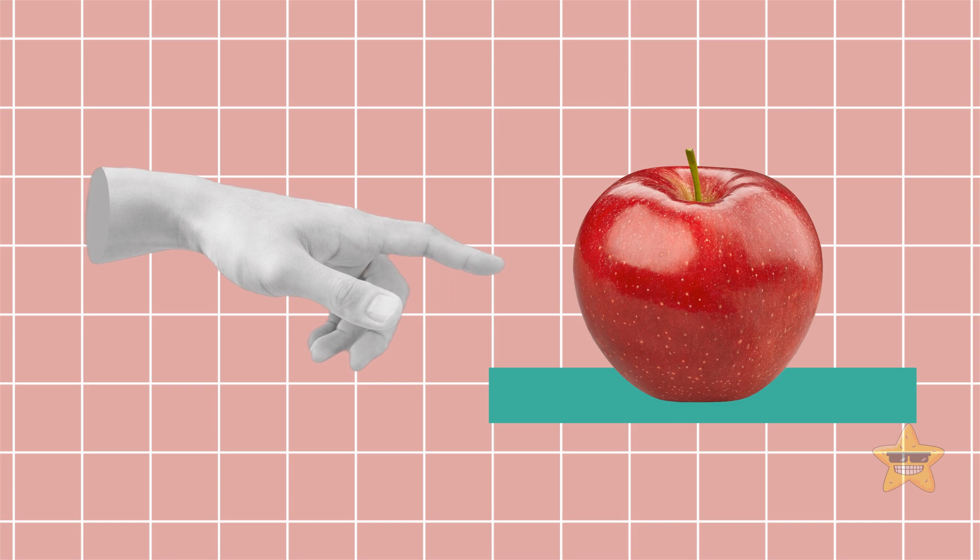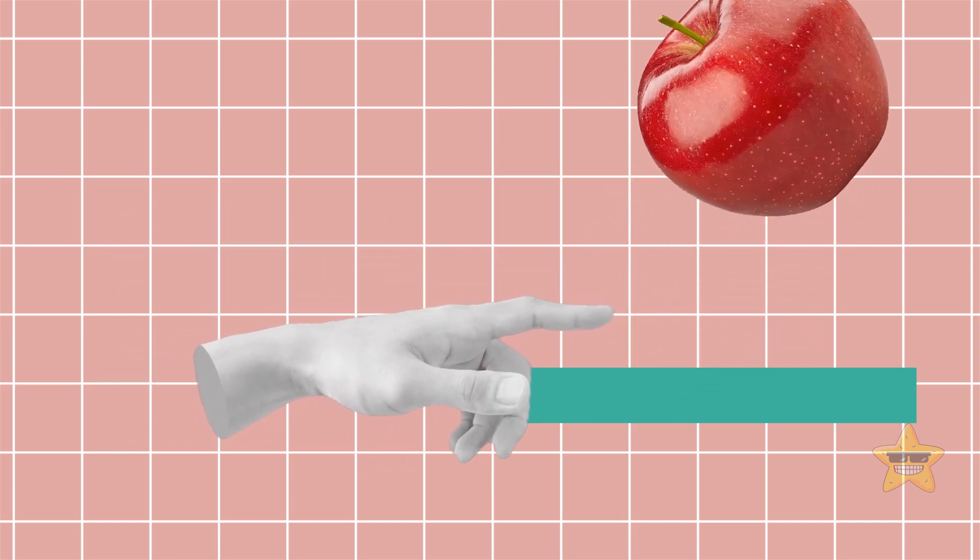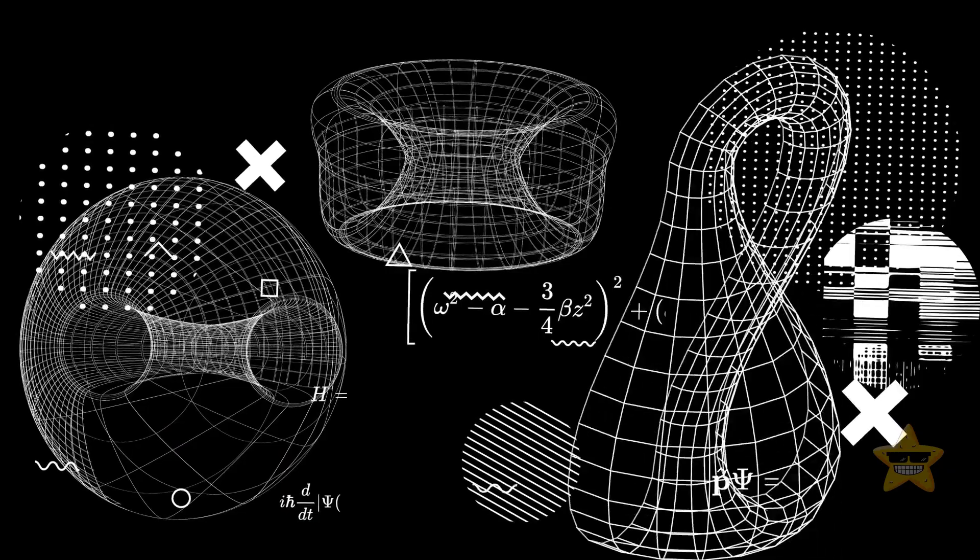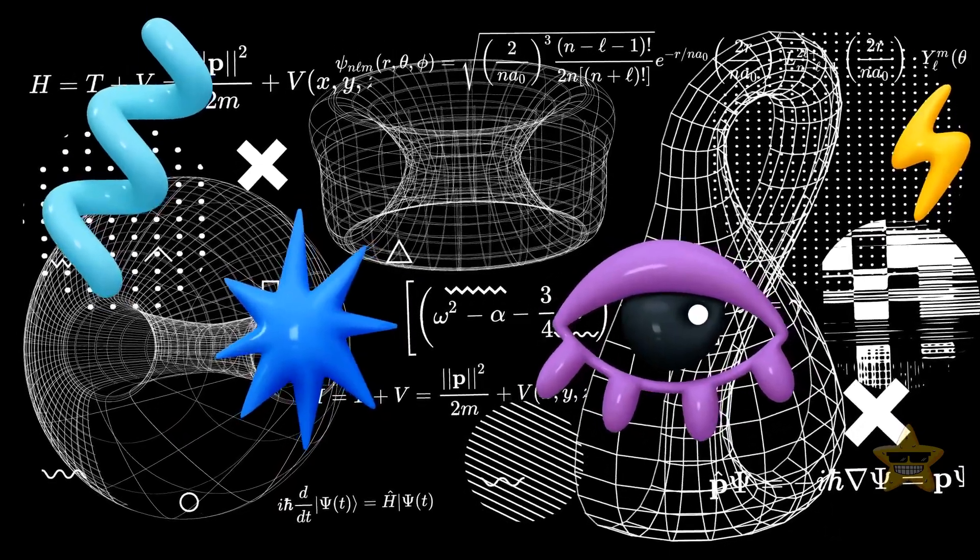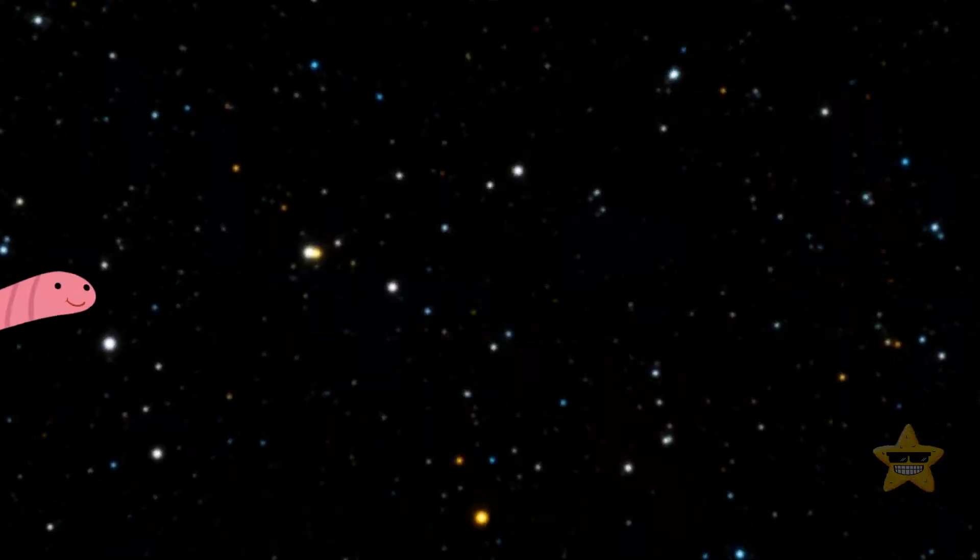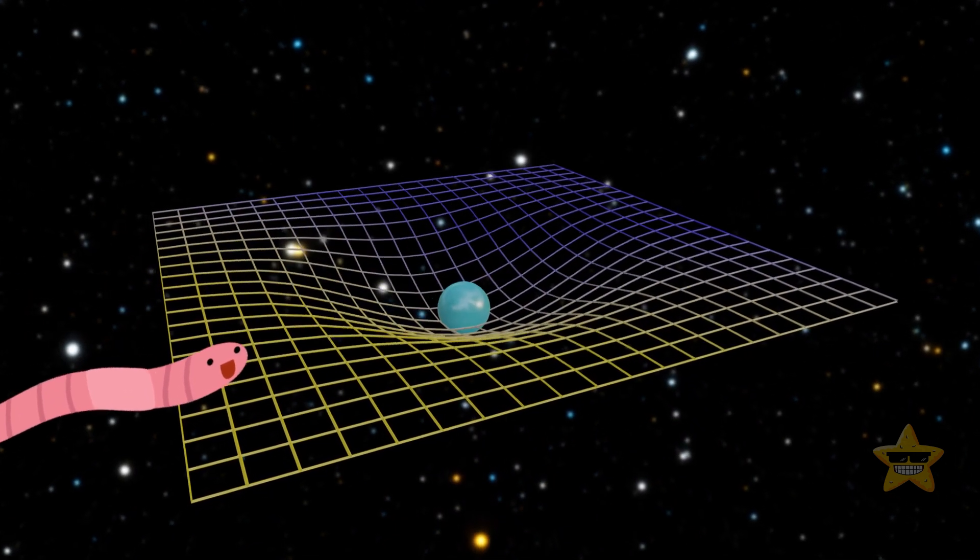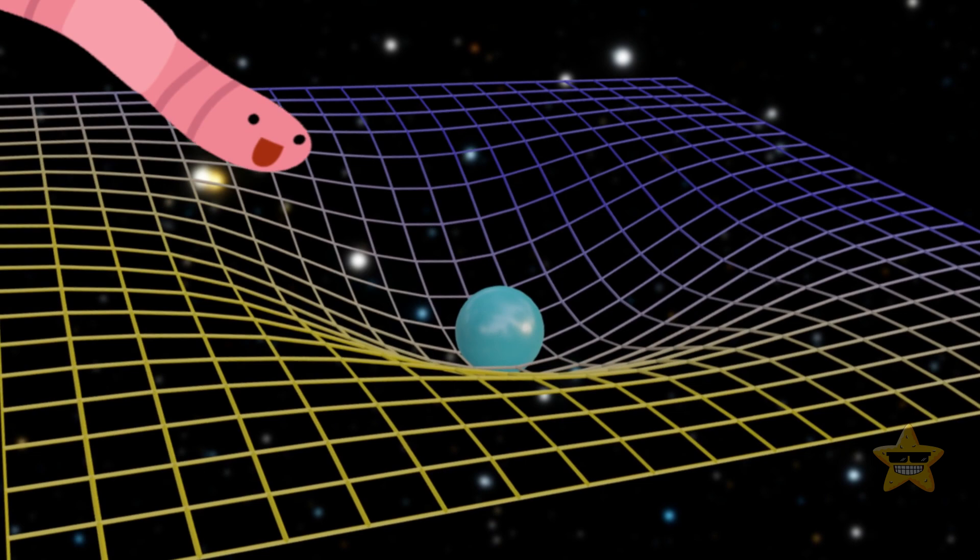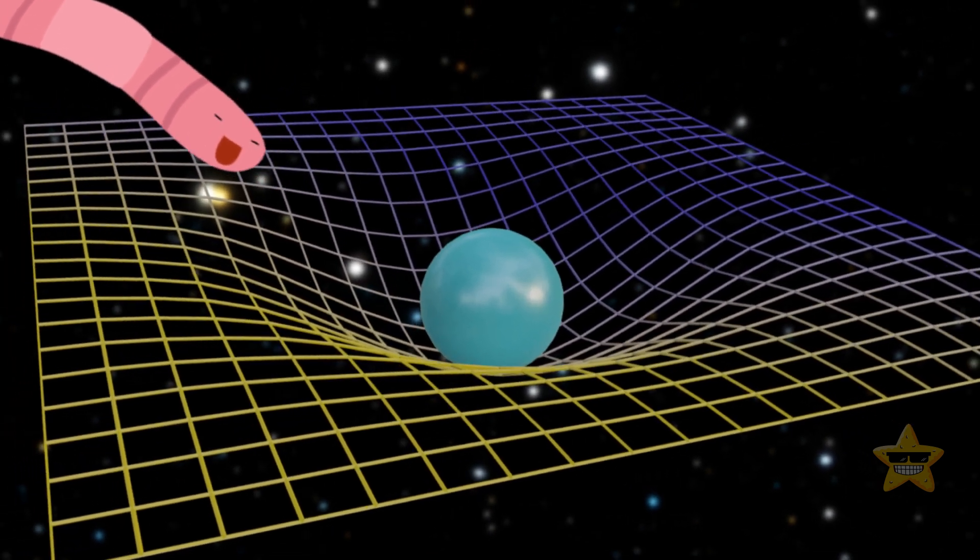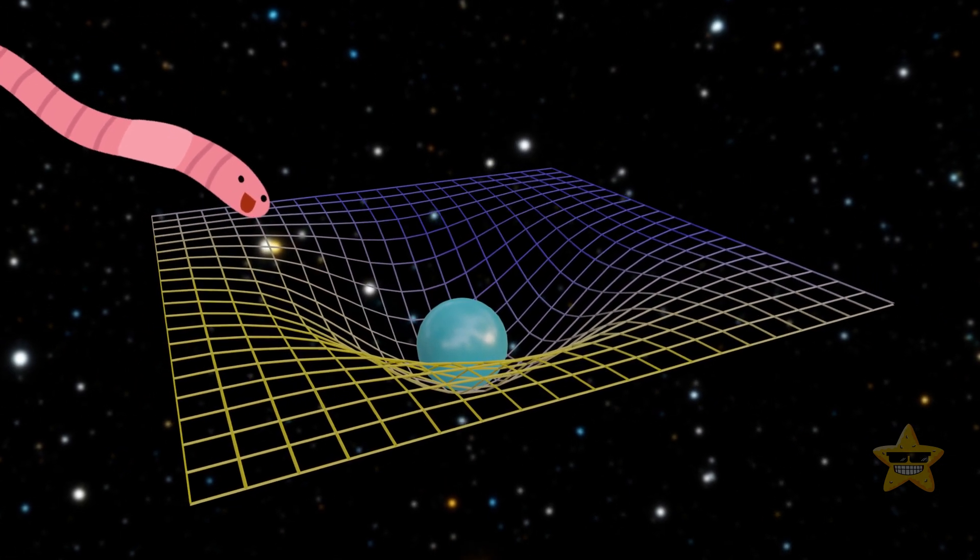He had a hunch that Isaac Newton's idea of gravity as a force wasn't completely right. So he began working on many different experiments to prove his theory. In the simplest of terms, Einstein's theory of general relativity says that gravity is a curving or warping of space. The more mass an object has, the more it warps the space around it.